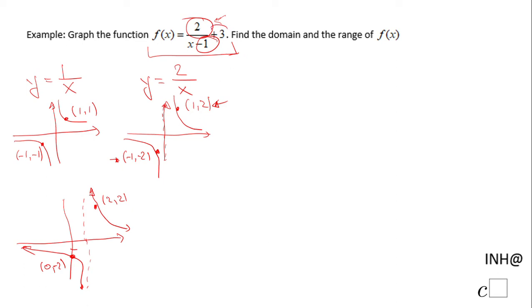And we have one more transformation to do, which is this plus 3. That means the graph needs to be moved 3 units up. So I'm gonna move the last graph, this one, 3 units up. That means I'm gonna move this horizontal asymptote first: 1, 2, 3. Keep this vertical asymptote at 1.